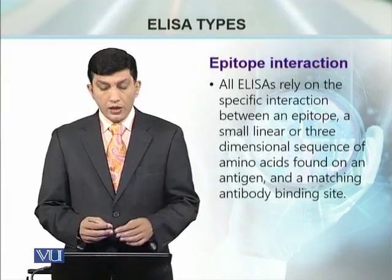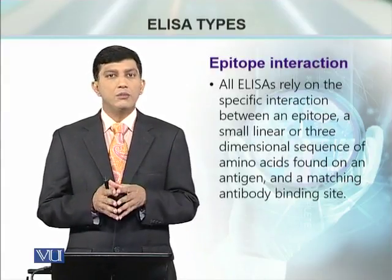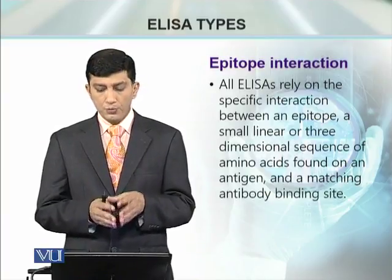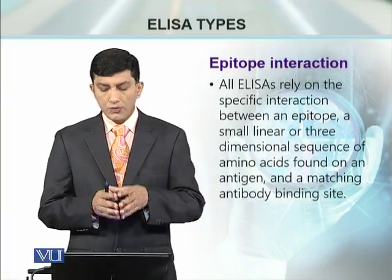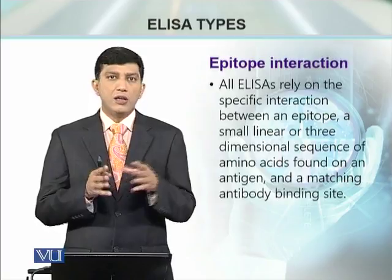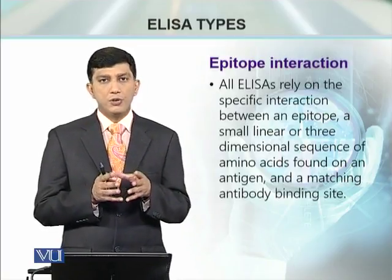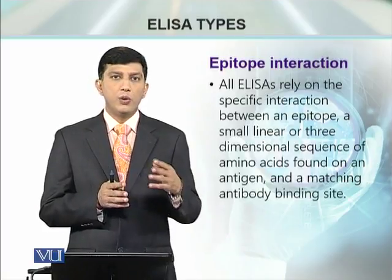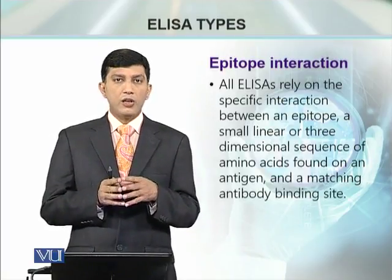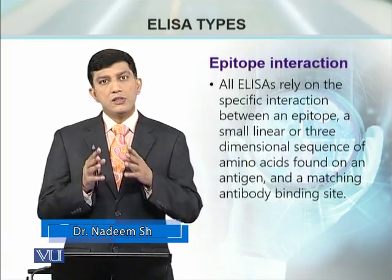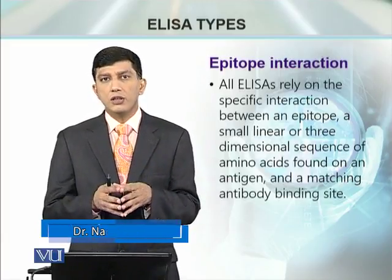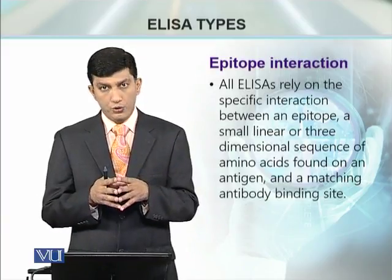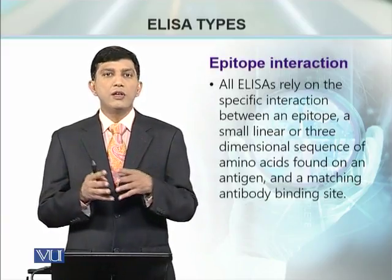Let's talk about the types of ELISA. ELISA is basically based on a principle of epitope interaction. An epitope is a segment or sequence of amino acids in a linear or three-dimensional protein that binds with the antibody, or antibody binding site. This sequence or the epitope is variable. One polypeptide chain can have more than one epitope, which can bind to different antibodies.